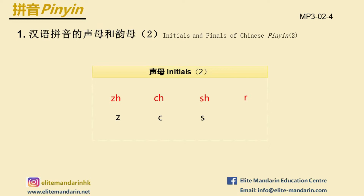The key point to pronounce them is to curl your tongue: 知, 吃, 虚, 日. 知 is similar to D in bats. 吃 is similar to T in cats. 虚 is similar to S in hands.